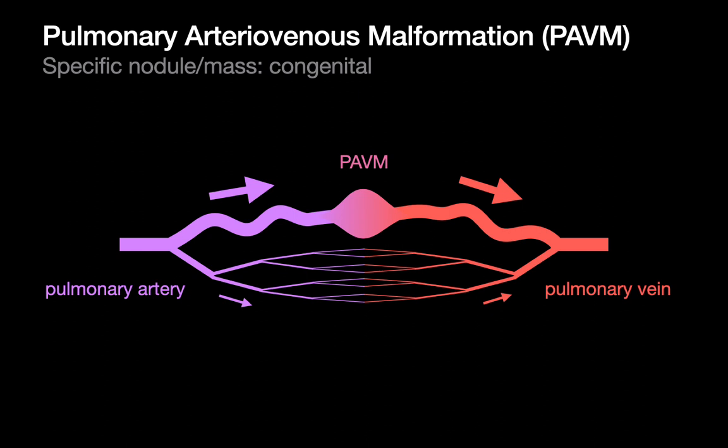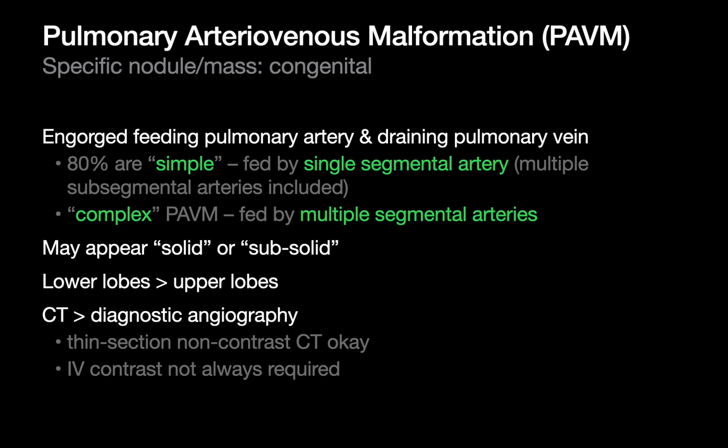This is what we may encounter when we see a PAVM — maybe a bulging area fed by large caliber, tortuous vessels coming and going. That bulging area may look like a nodule, especially on a non-contrast CT. But it will look different in that we'll see large serpiginous or tortuous vessels coming and going from it, which is what lends it specificity. These PAVMs can be divided between simple and complex PAVMs — simple ones fed by a single segmental pulmonary artery, complex ones fed by multiple segmental pulmonary arteries.